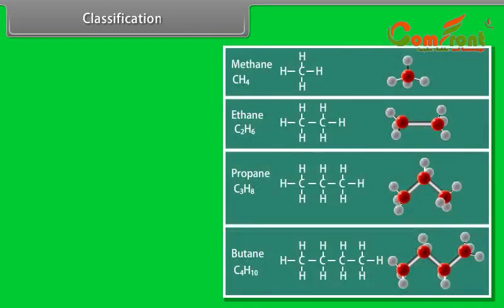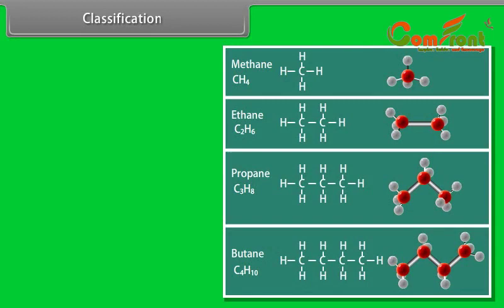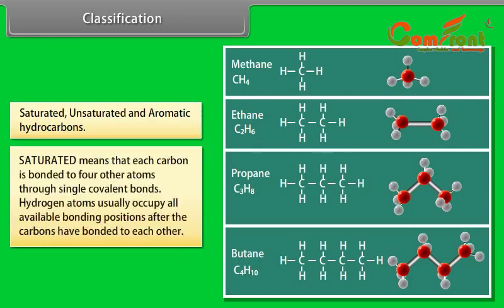Depending upon the types of carbon-carbon bonds present, hydrocarbons can be classified into three main categories: saturated, unsaturated and aromatic hydrocarbons. Saturated means that each carbon is bonded to four other atoms through single covalent bonds. Hydrogen atoms usually occupy all available bonding positions after the carbons having bonded to each other.